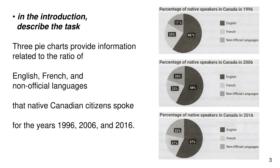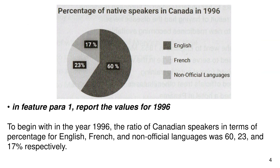In the introduction, describe the task: three pie charts provide information related to the ratio of English, French, and non-official languages that native Canadian citizens spoke for the years 1996, 2006, and 2016. In Feature Para 1, report the values for 1996.